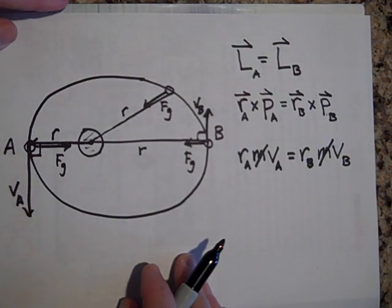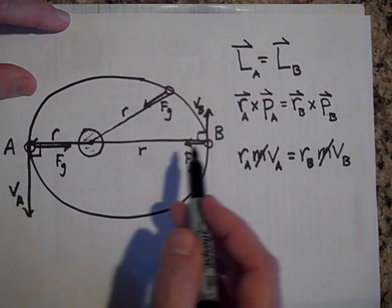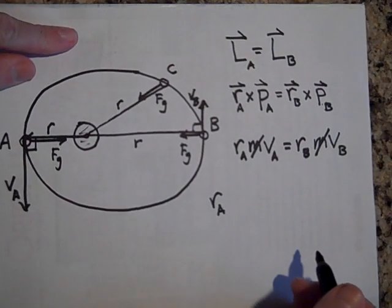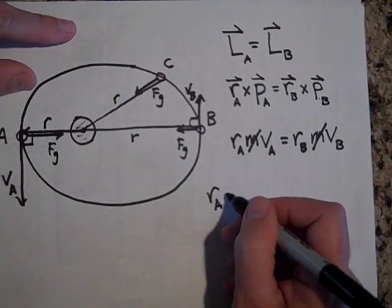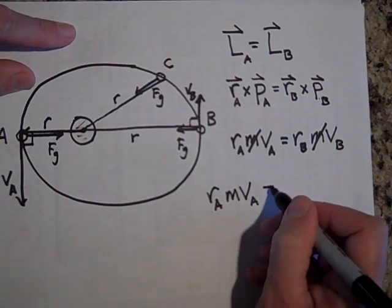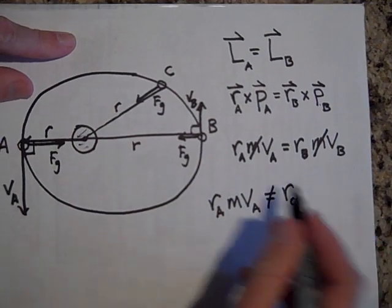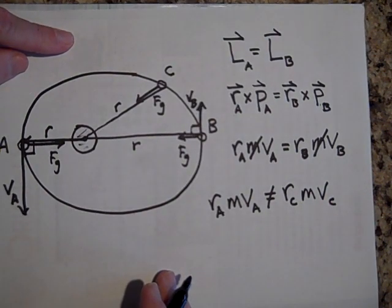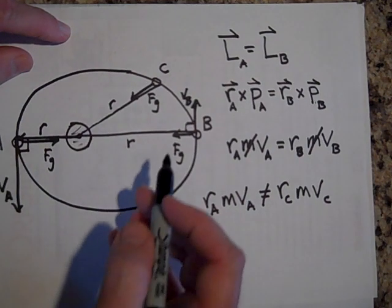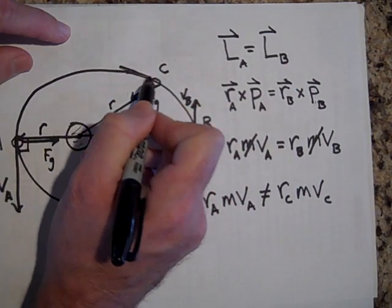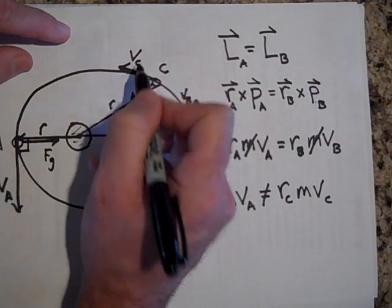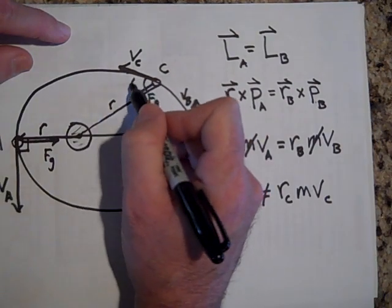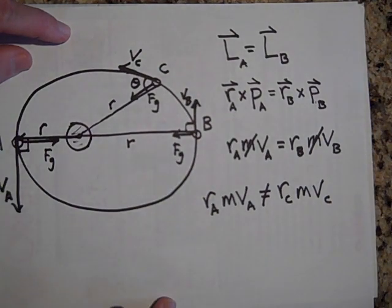Now you also got to be careful here because you can't say if this is point C, I want you to know that R_A times M times V_A, that's not equal to R at C times M times V at C. It's not, those are not equal to one another. And here's why. Do you know why? It's because the V at this point right here is this way. That's your V, V sub C. And so your momentum is that way. And you see how your momentum is not completely perpendicular to your R vector. Let's call that theta. It's not completely perpendicular to that.